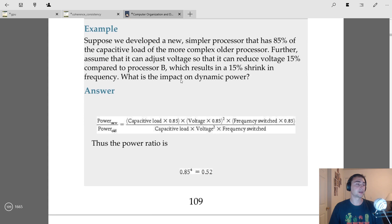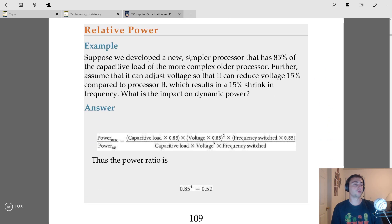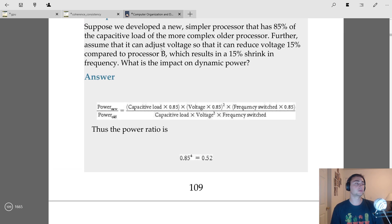We should also talk about relative power a little bit. Let's think about if we were to have a new, simpler processor that has 85% of the capacitive load of a more complex older processor. And let's say that we can also tune the voltage a little bit, and we can also shrink the frequency as well. How would this impact dynamic power or switching power?